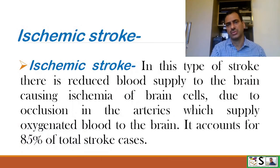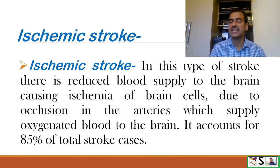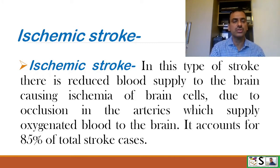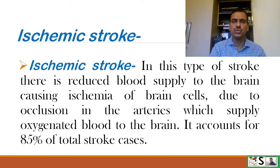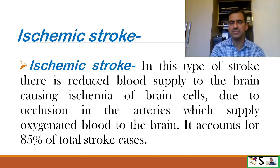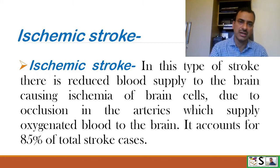What is ischemic stroke? Ischemia means decreased oxygen supply to the cells, causing them to begin to die. In ischemic stroke, there is reduced blood supply to the brain causing ischemia of brain cells, due to occlusion in the arteries which supply oxygenated blood to the brain. It accounts for 85% of total stroke cases, meaning most strokes are ischemic in type.